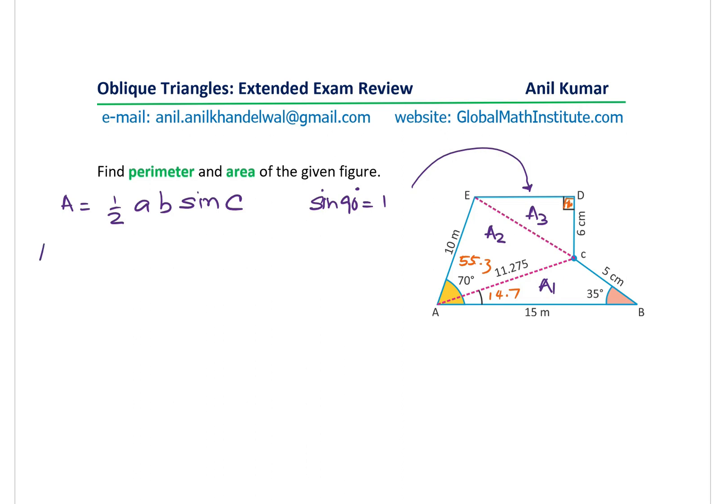So the area of the first triangle is half of 15 times 5 times sine of 35 degrees. The area of the second triangle is 11.275 times 10 times sine of 55.3 degrees. And the third is half of base times height, and this was 7.9 times 6. That's it.